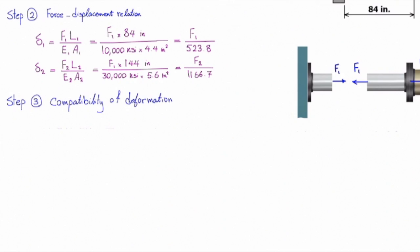Last step is compatibility of deformation, which is similar to the previous problem. Delta one plus delta two equals zero.